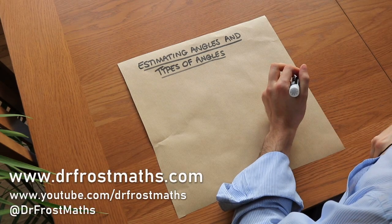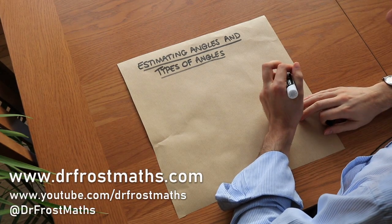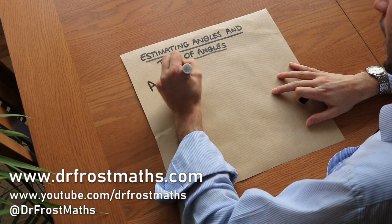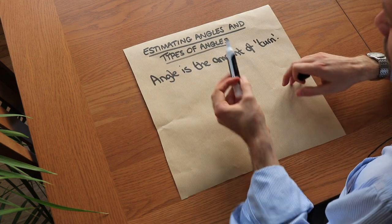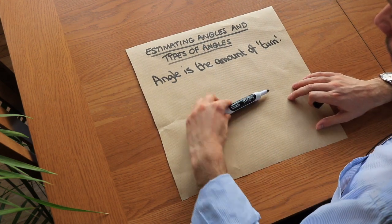Hello and welcome to this video on estimating angles and types of angles. An angle is the amount of turn, and by turn I mean to what extent you're spinning around about a point.